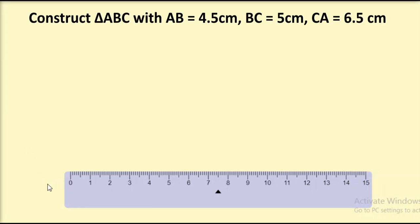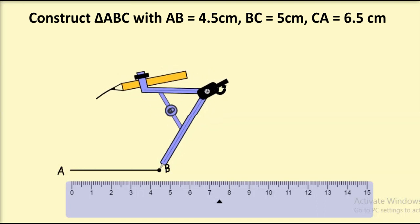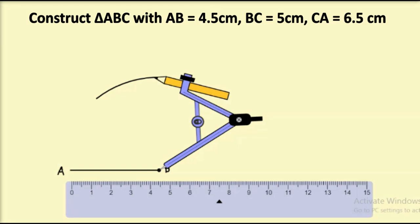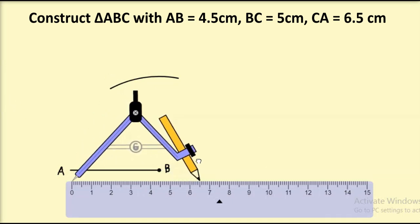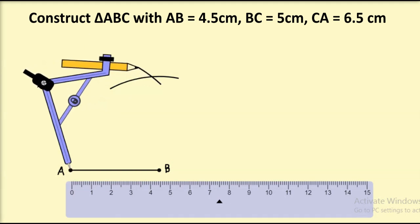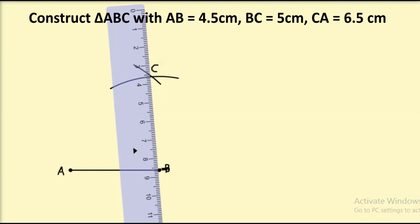First, draw a line segment AB of length 4.5 cm. With B as center and radius BC equal to 5 cm, draw an arc as shown. Then, with A as center and radius 6.5 cm, draw another arc so that it intersects the previous arc. Mark the point of intersection as C. Now join points B and C, and also A and C. Triangle ABC is the required triangle.